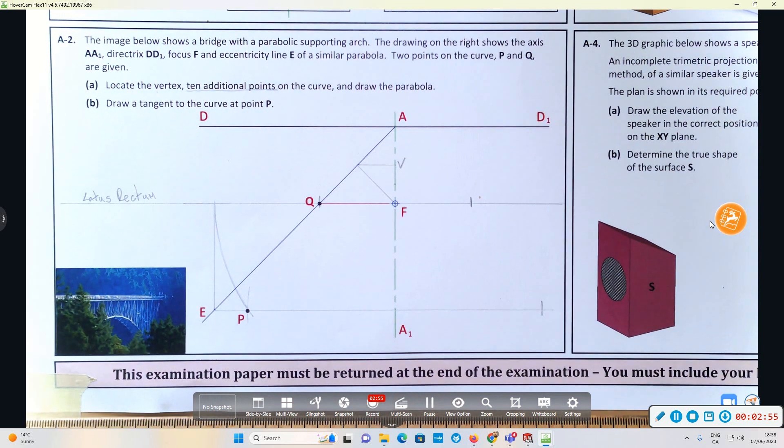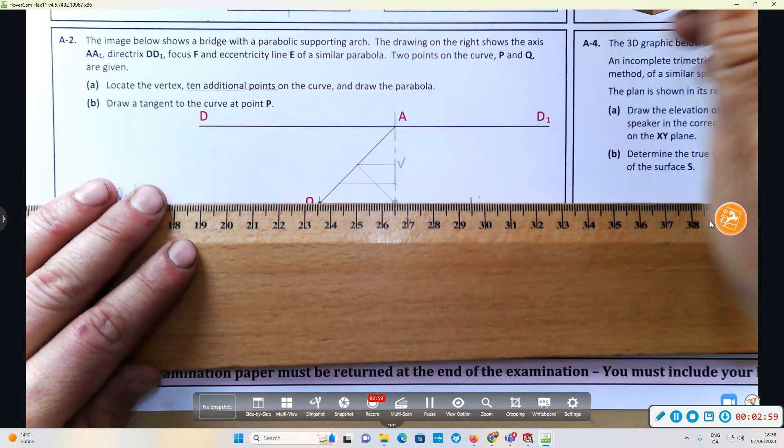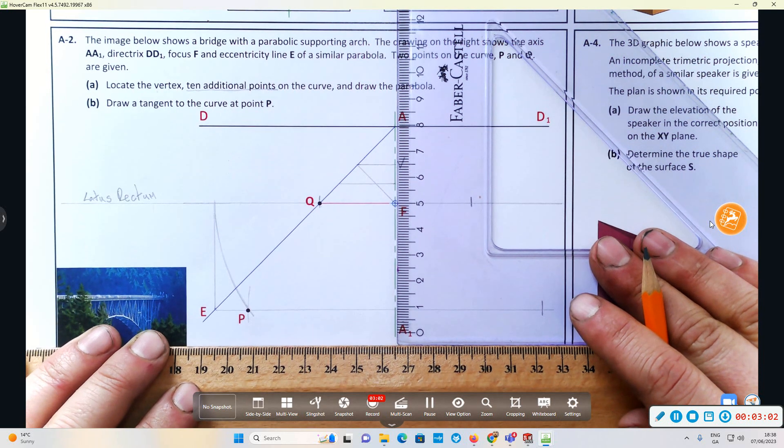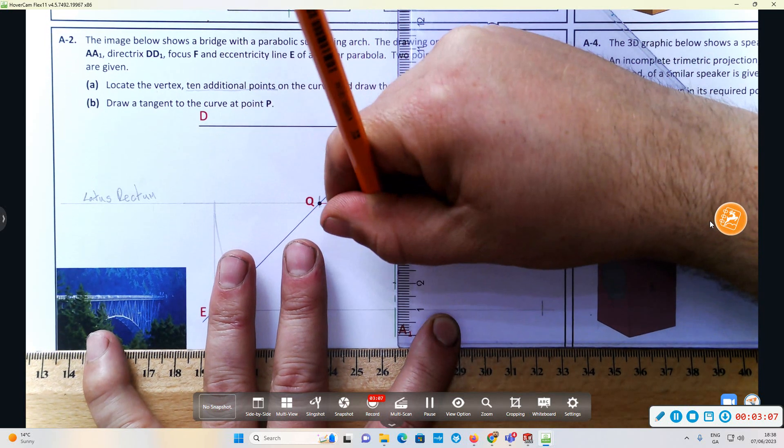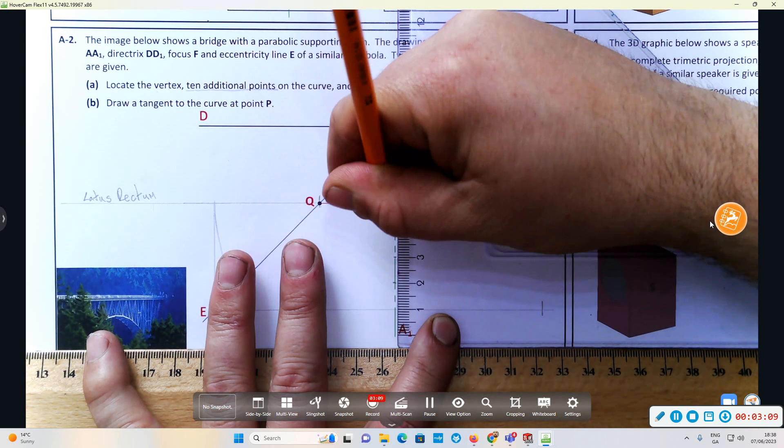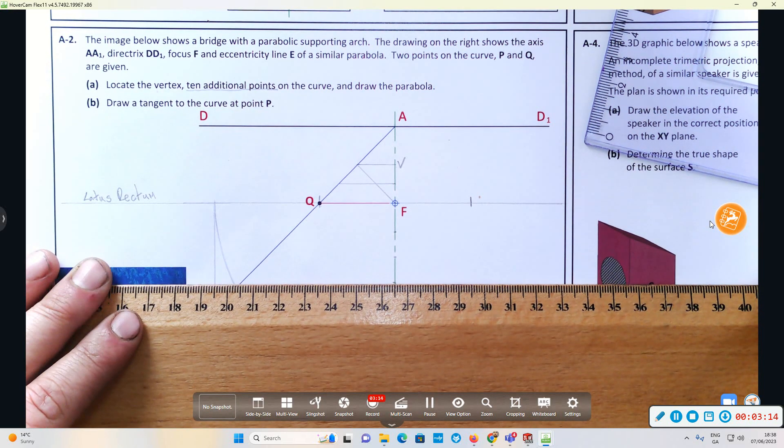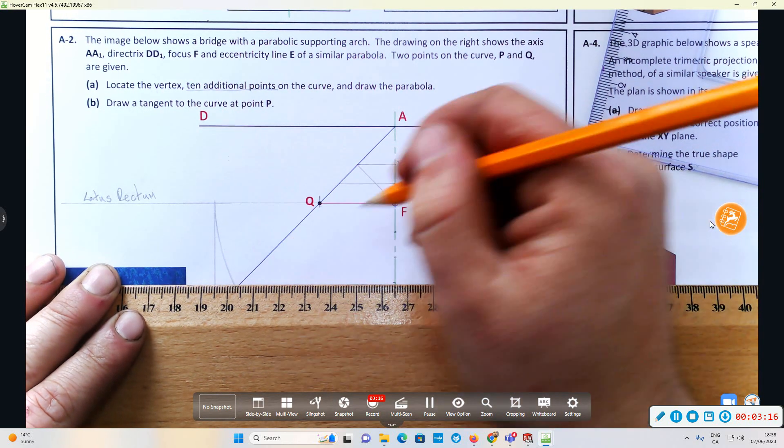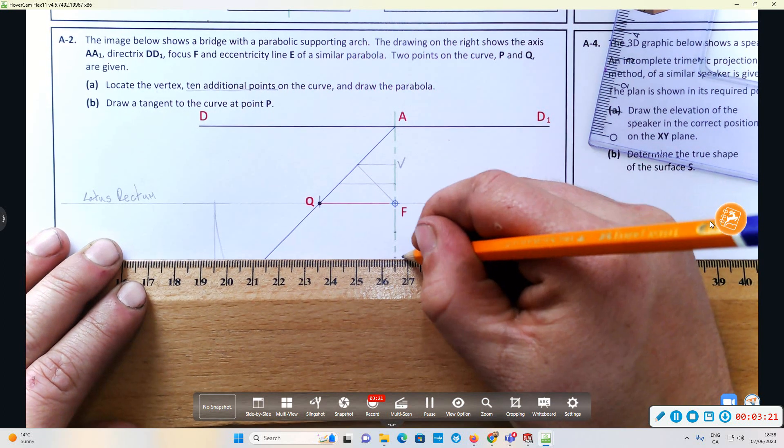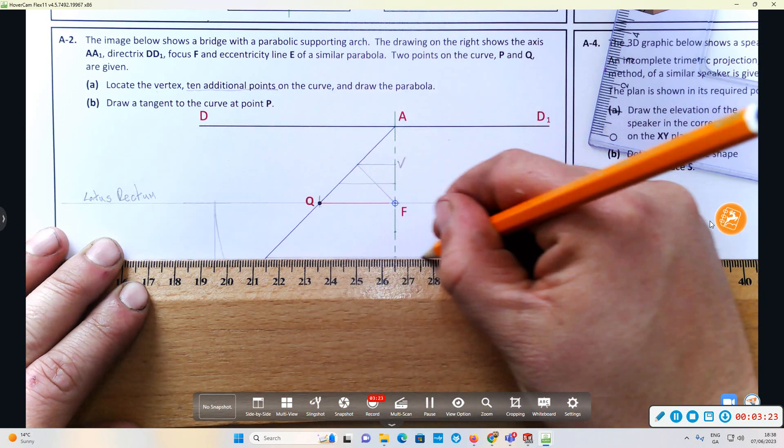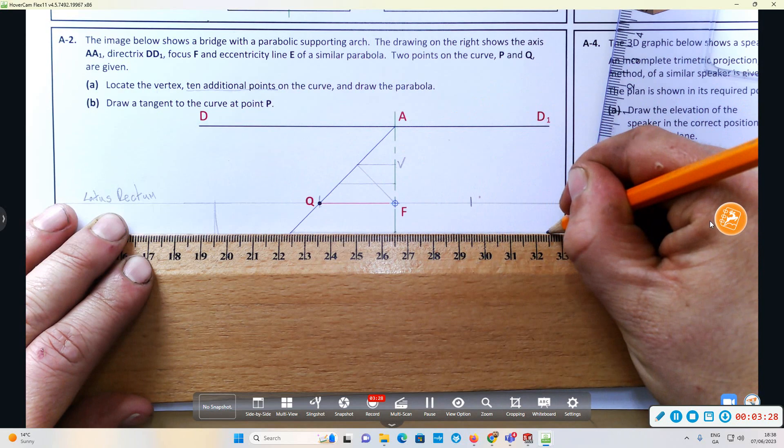I'm going to put it roughly halfway between V and S. Then I'm going to make these distances roughly every ten—they don't have to be every ten, they could be uneven numbers. I'll mark them every ten. Now I'm going to draw lines parallel to the directrix until we hit the line of eccentricity.